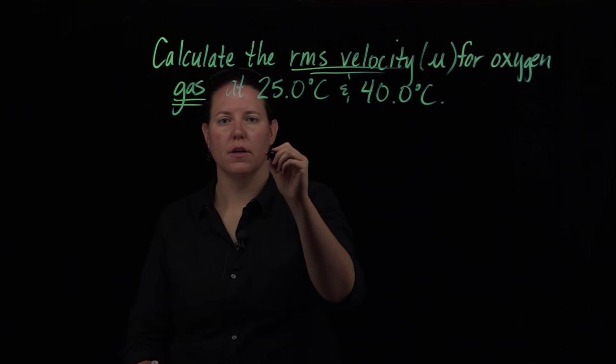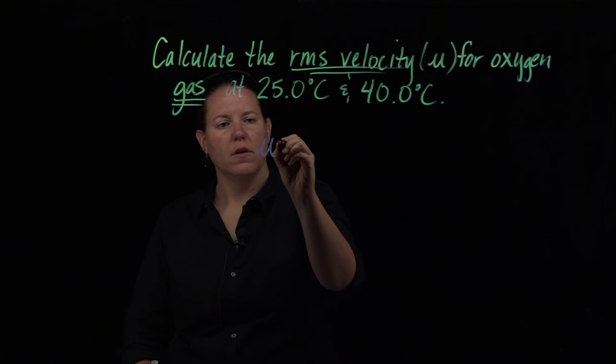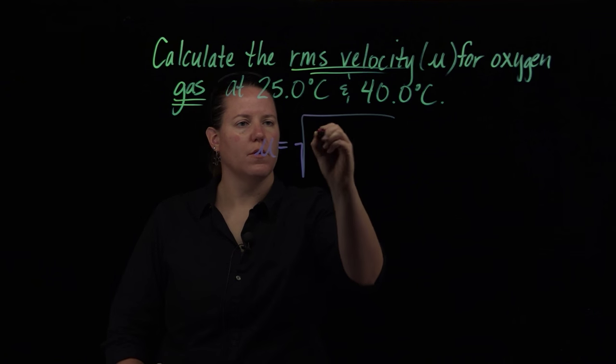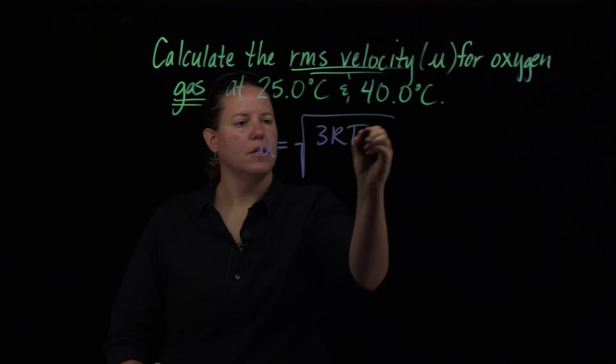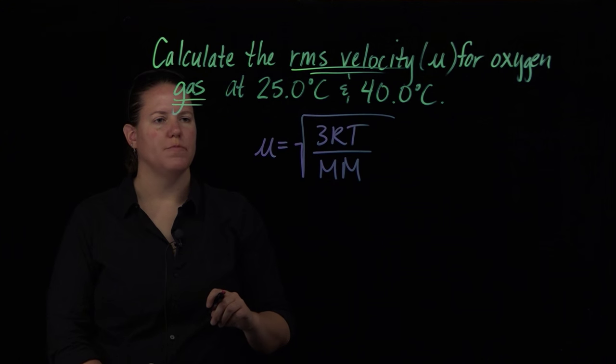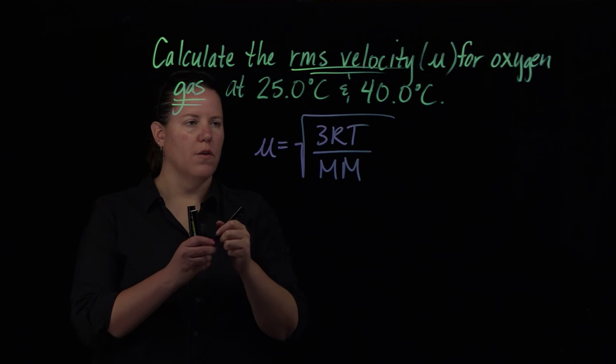Now we're going to calculate this using the equation we've learned. Root mean square velocity equals the square root of 3RT divided by molar mass. We have a sense of what this looks like.